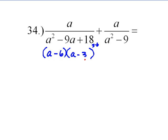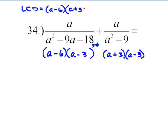Negative 6a, negative 3a, negative 6 times negative 3 is positive 18. Now this is the difference of squares, so it's a plus 3, a minus 3. So what is our least common denominator?